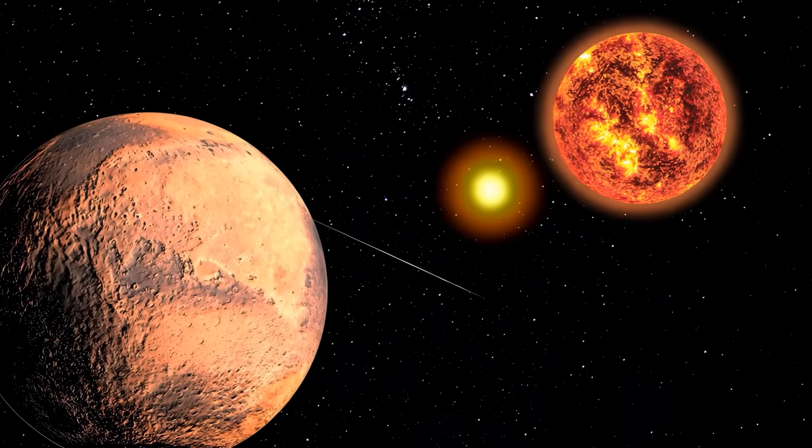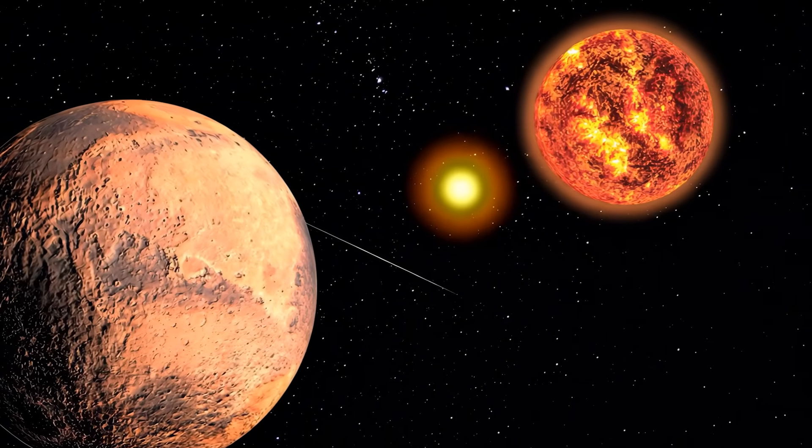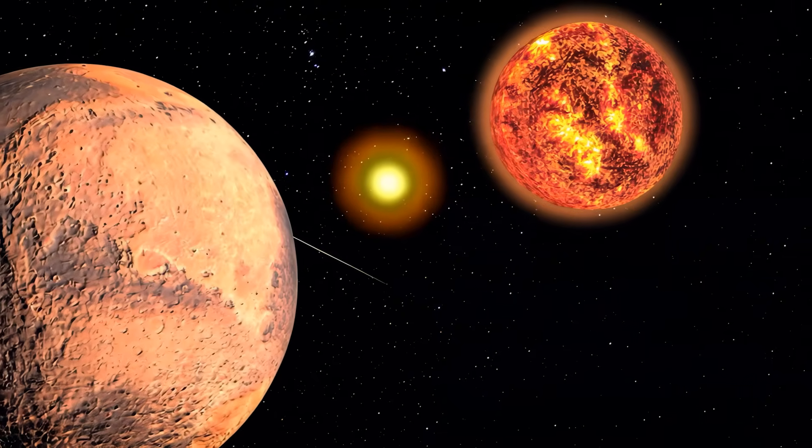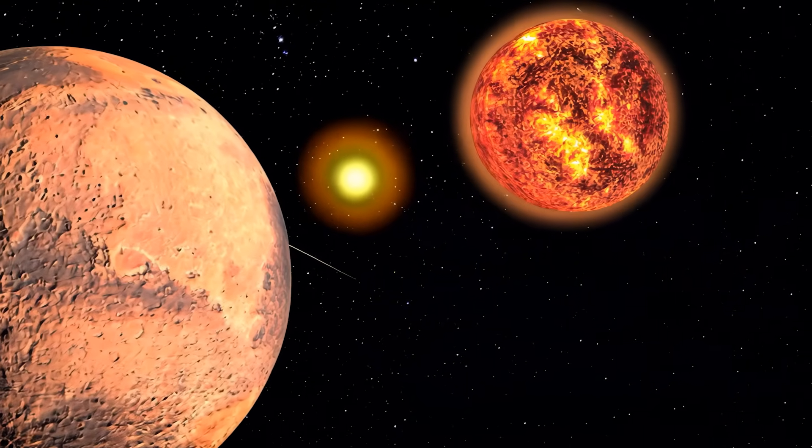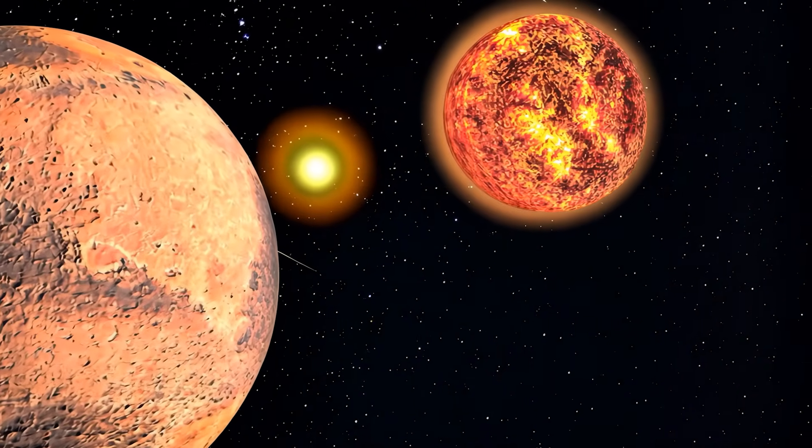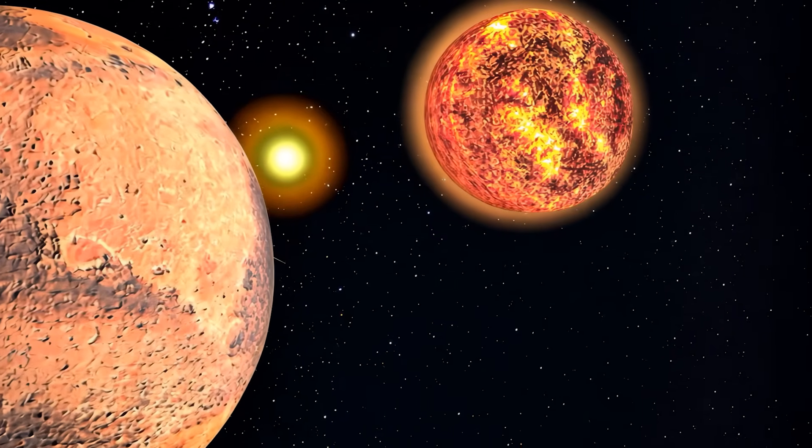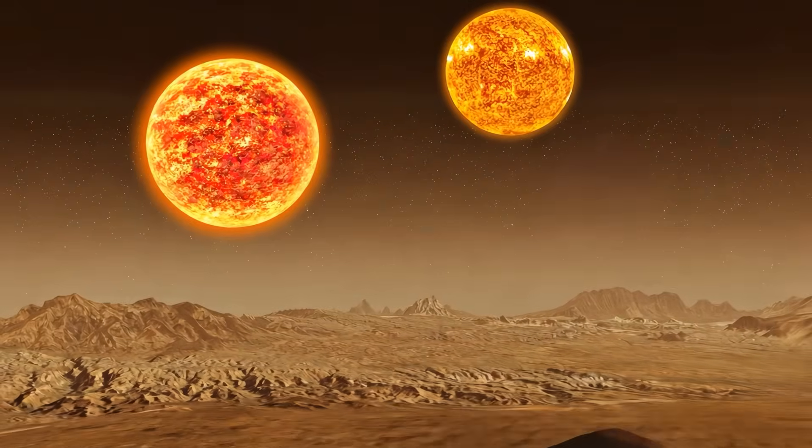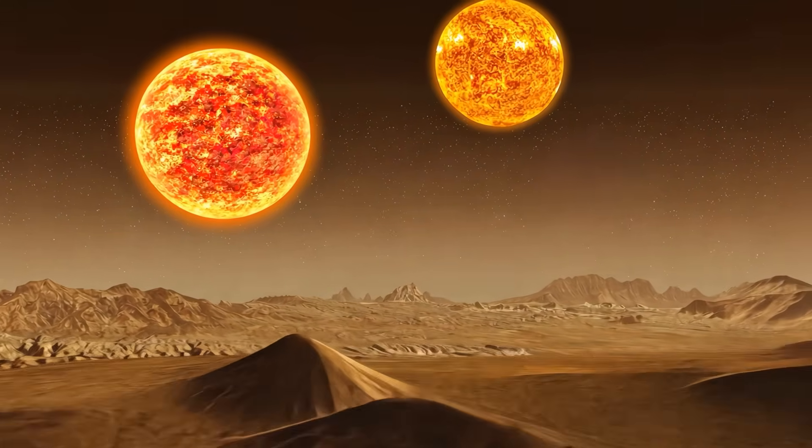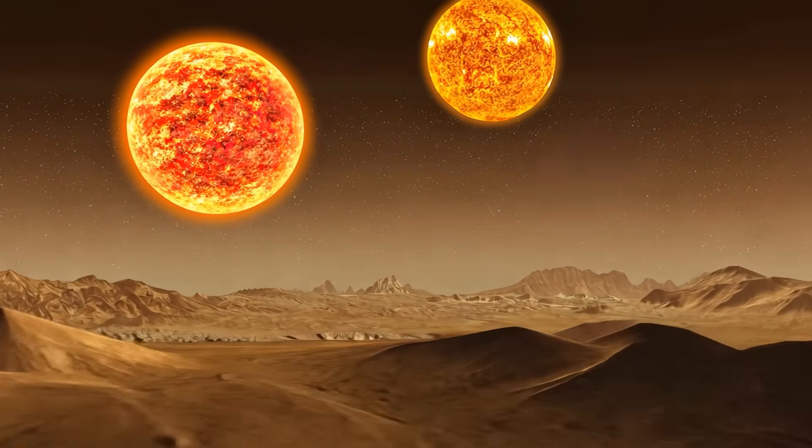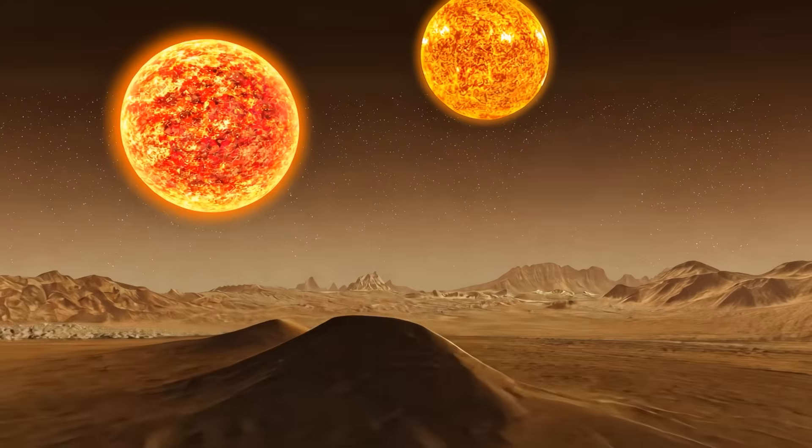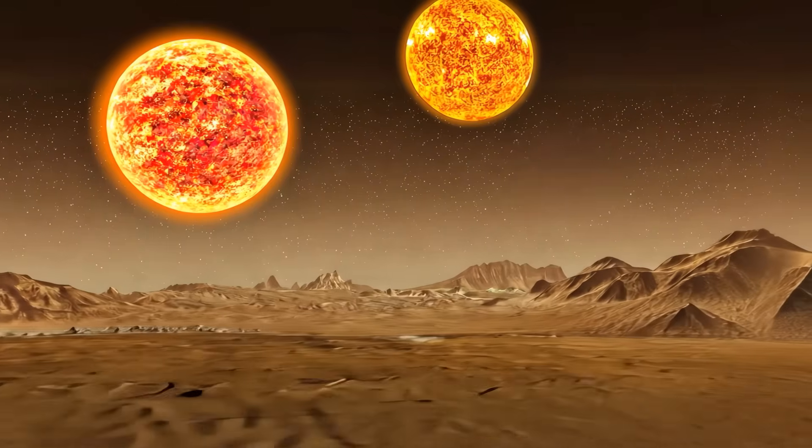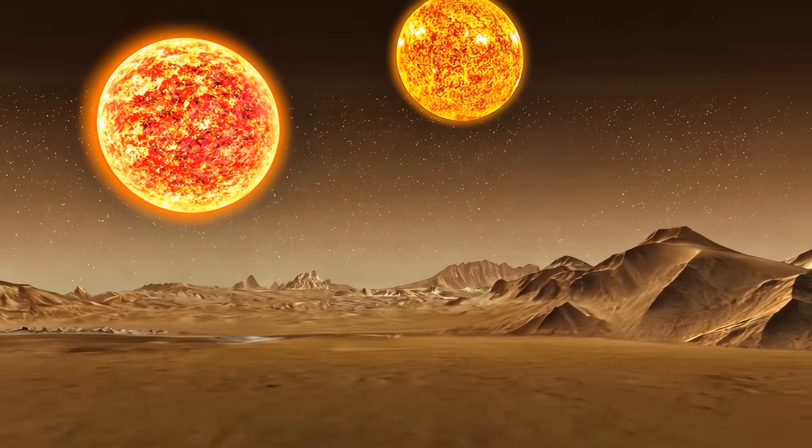Unlike the fictional Tatooine, which hosted moisture farms and Jawas, 2M1510ABb orbits brown dwarfs, cosmic objects that glow a deep red-orange rather than the yellow-white of the stars in Star Wars. But the visual from the planet's surface might be even more alien and spectacular than anything George Lucas imagined, with two reddish suns dancing across the sky in patterns that would utterly bewilder any creature evolved on Earth.